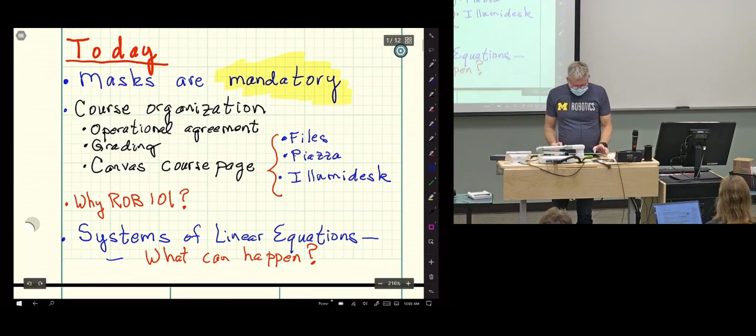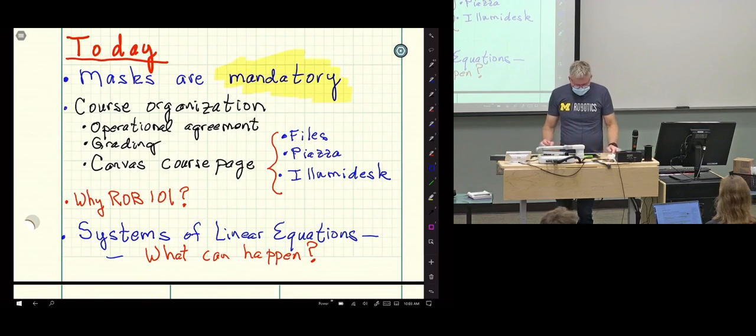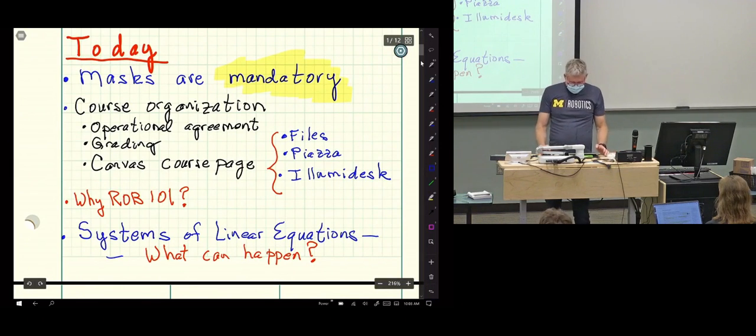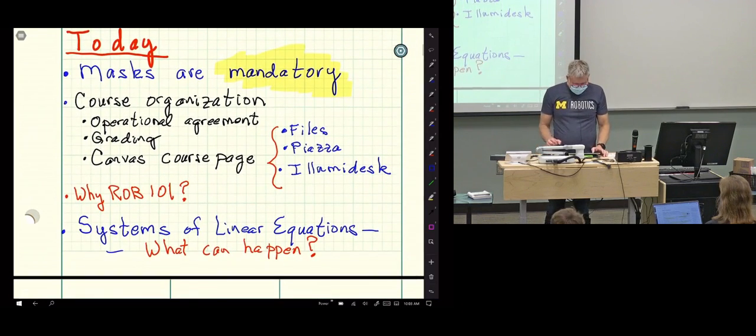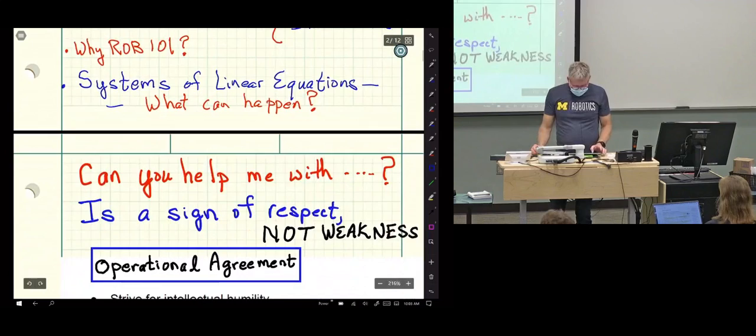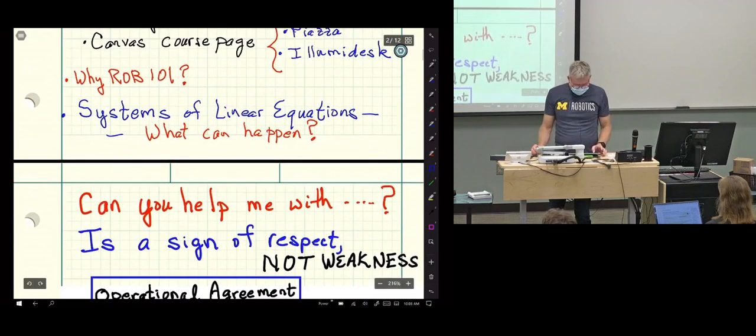So here's the things we want to go through. The course organization, operational agreement, grading, and the canvas course page. So let's start with the operational agreement.